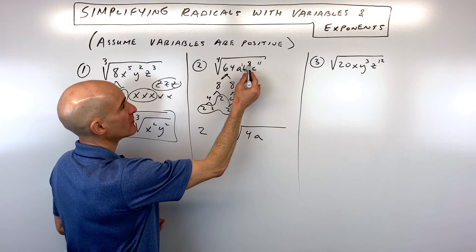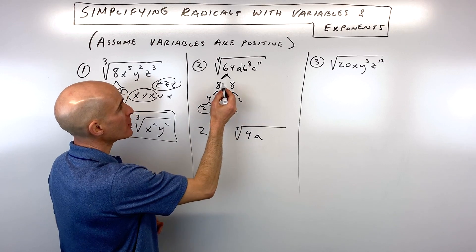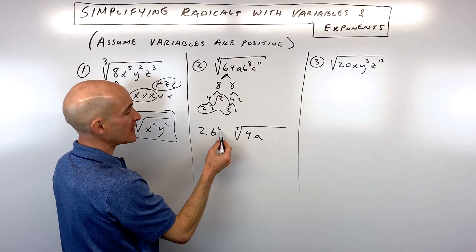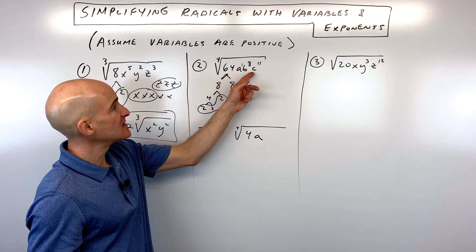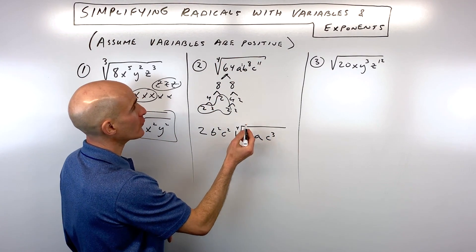Here we've got b to the 8th. So we're looking for groups of 4. That's going to be b squared. You can see 4 goes into 8 twice with none left over. Same thing with the c's. We've got 4 goes into 11 twice with 3 left over.